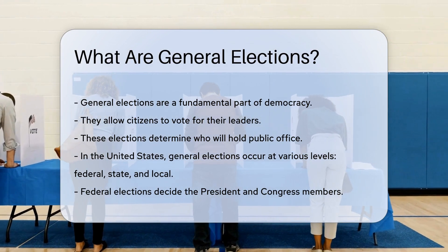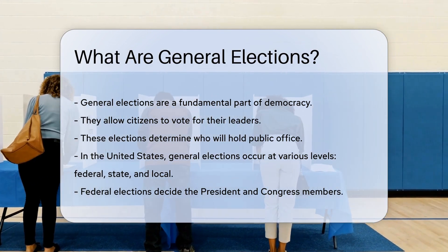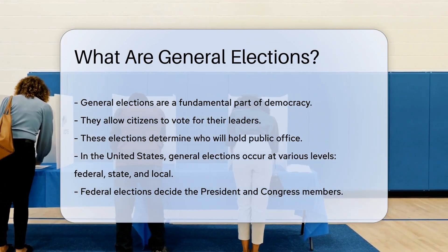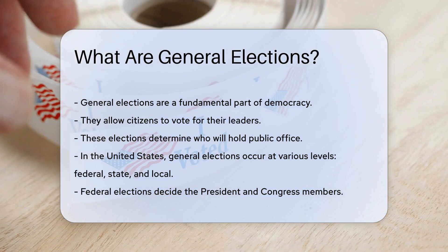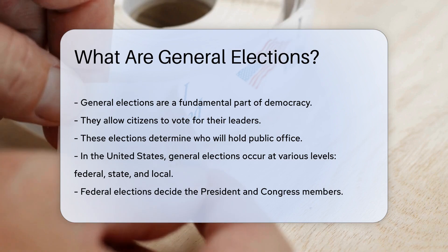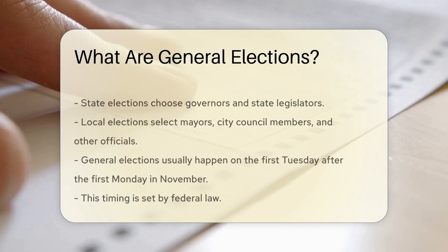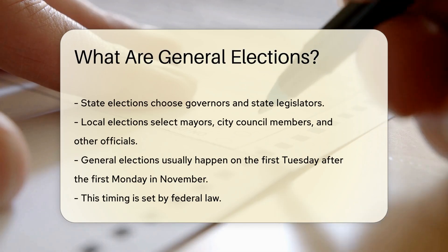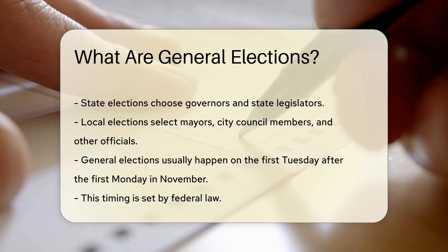In the United States, general elections occur at various levels. These levels include federal, state, and local. Federal elections decide the president and congress members. State elections choose governors and state legislators. Local elections select mayors, city council members, and other officials.